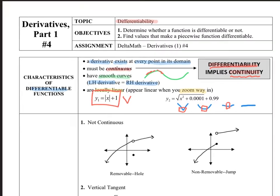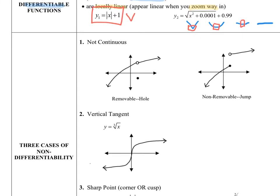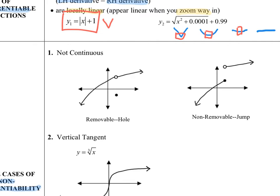What I'm able to accomplish with the square root function cannot be done with the absolute value function. In this next section, we talk about three cases of non-differentiability. Number one is discontinuity — if a function is not continuous, it will automatically be not differentiable. That discontinuity can be removable, where a point is removed and relocated, generating a hole, or non-removable, such as a jump discontinuity where the function stops at a value and jumps to another.